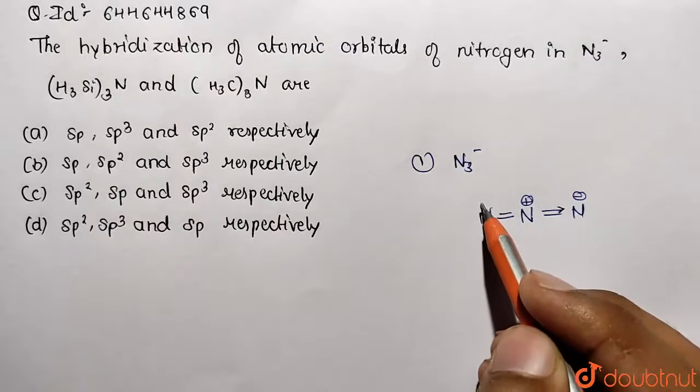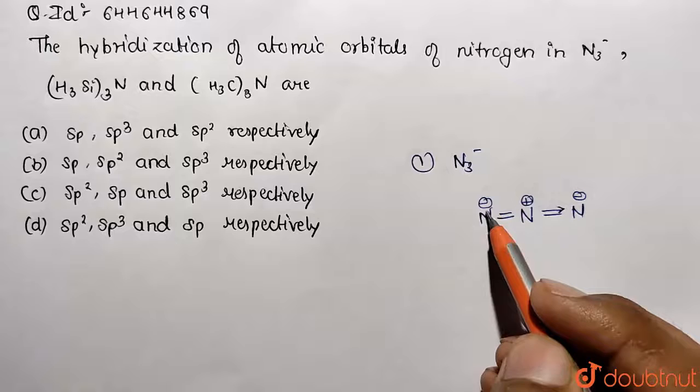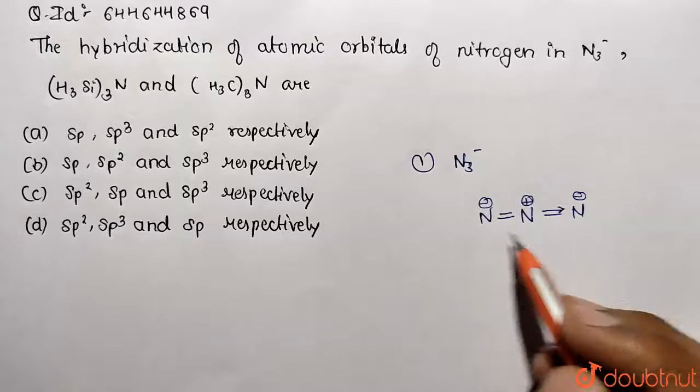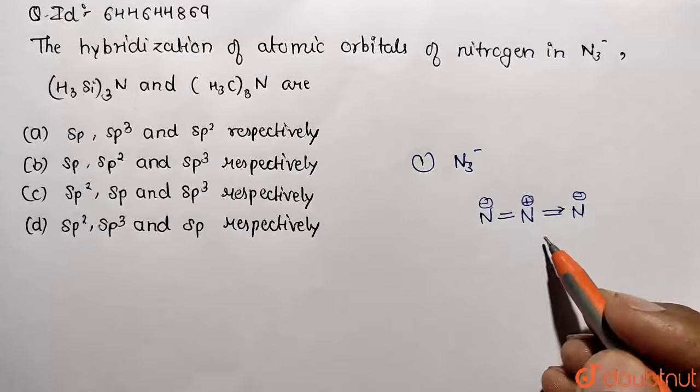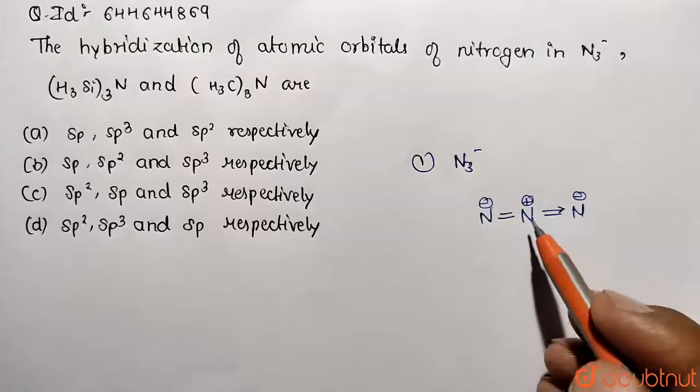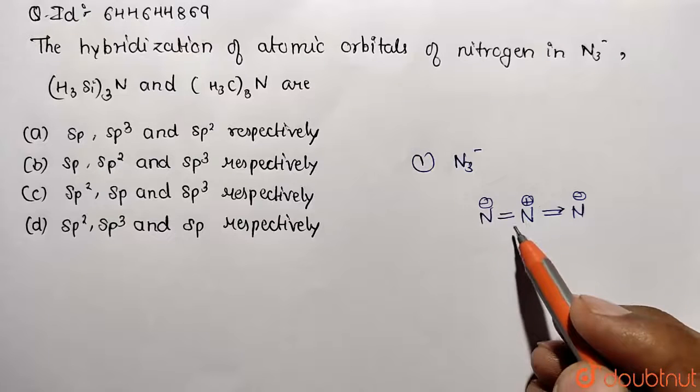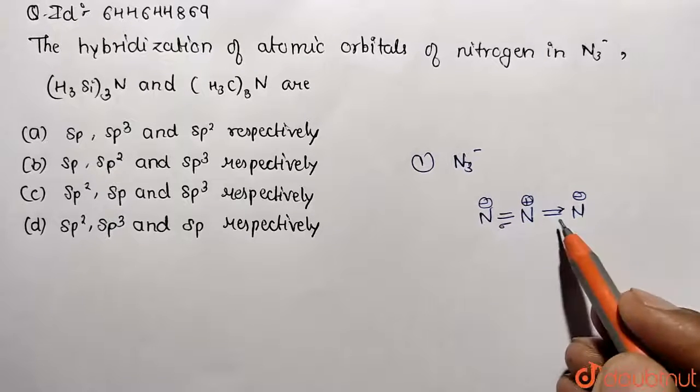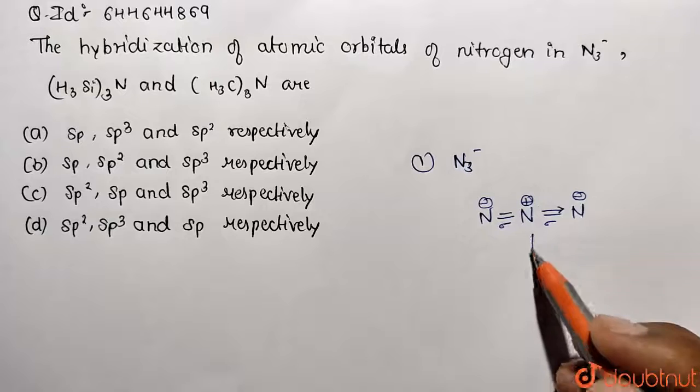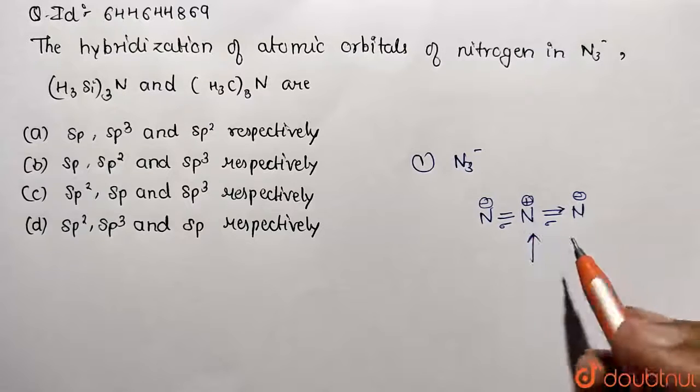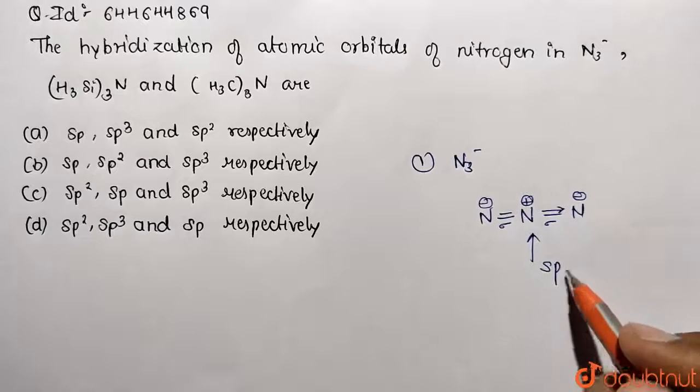Now this nitrogen is having already a lone pair on it and it is not sharing, so it can be represented using minus sign or you can also put lone pair. This is the shape. Now if you are interested in hybridization, how you are going to calculate number of sigma bonds that are being present? This is first one will be sigma, here also first one will be sigma. So corresponding hybridization, that means we need two orbital space, so it is going to be sp hybridized.